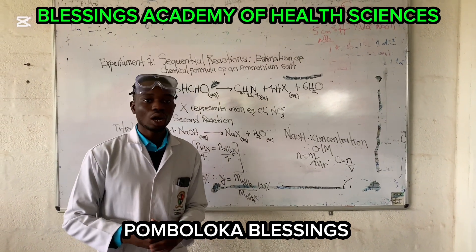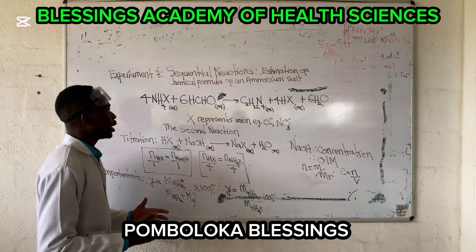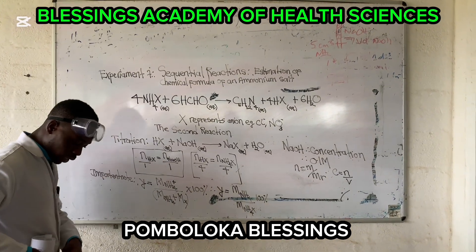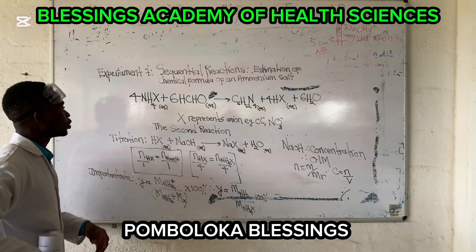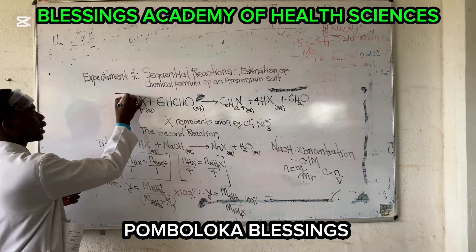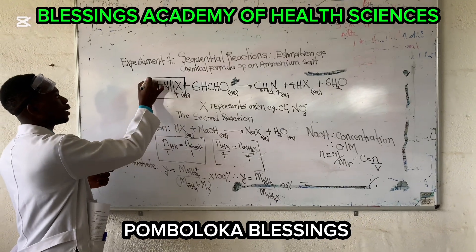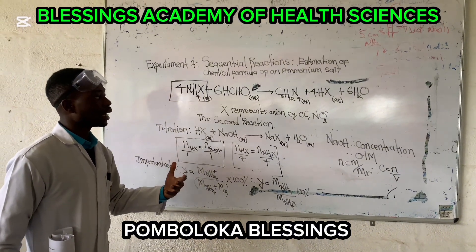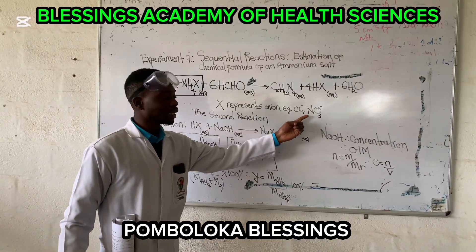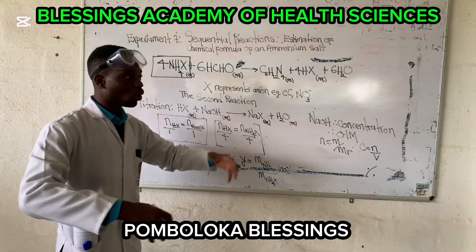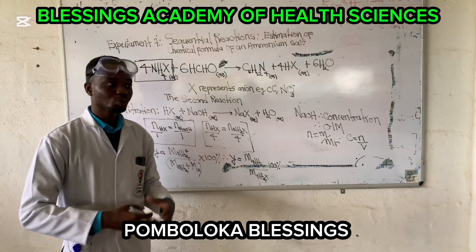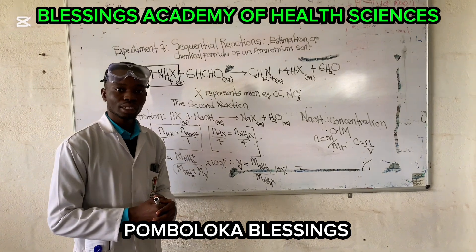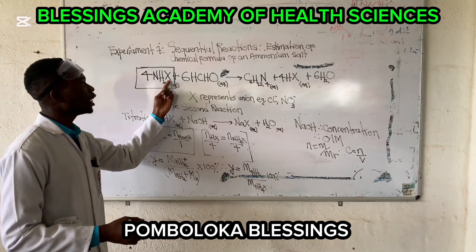Our main focus and general objective in this video is to find out or estimate the chemical formula of an ammonium salt. The ammonium salt we're talking about is NH4X. This is the ammonium salt. In this ammonium salt, we have the value of X, and X is going to represent an ion — be it the chloride or the NO3. Our exercise is to do these sequential chemical reactions to find out the value of X, because when we know X, we will know what kind of ammonium salt this is.